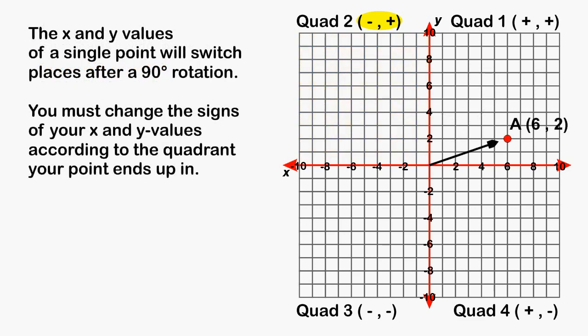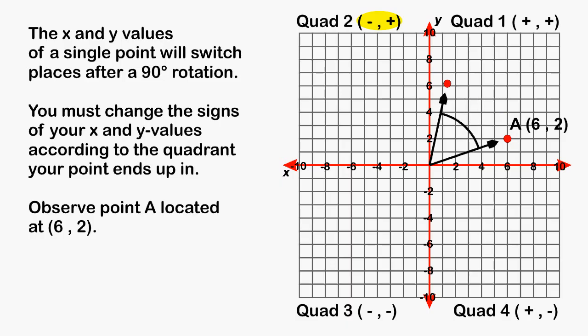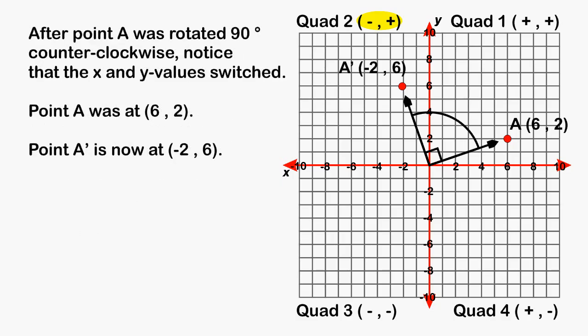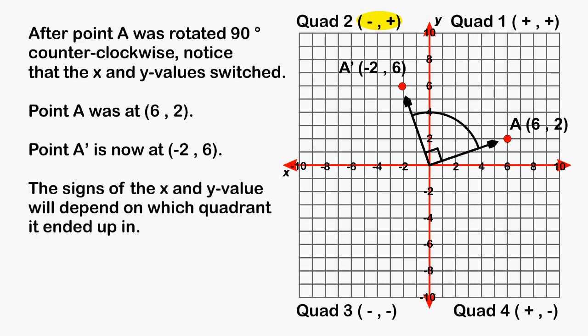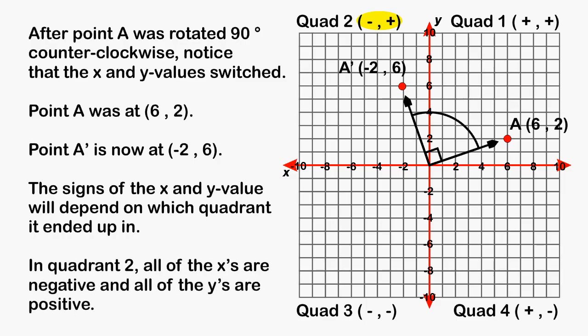Now, with any point that is being rotated 90 degrees in either direction, one thing that we should note is that the x and the y values will be switched around after being rotated. For example, look at point A on the screen, which is located at positive 6, positive 2. If we rotate that point 90 degrees, the x and the y values will be switched — you would write the 2 first and the 6 second. After switching your numbers around, you have to look at which quadrant your point is in and change the negative and positive values according to that quadrant. Because we rotated a point to quadrant number 2, we have to make sure that our x value is negative and our y value is positive.